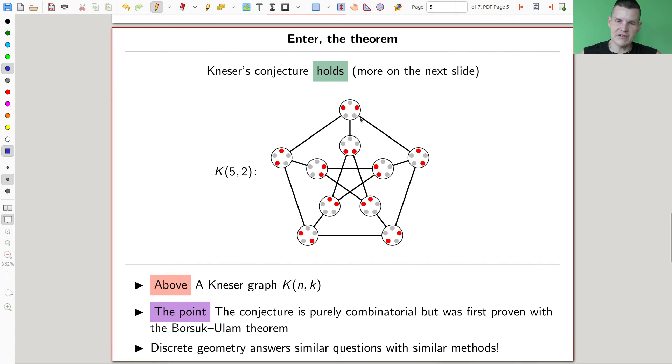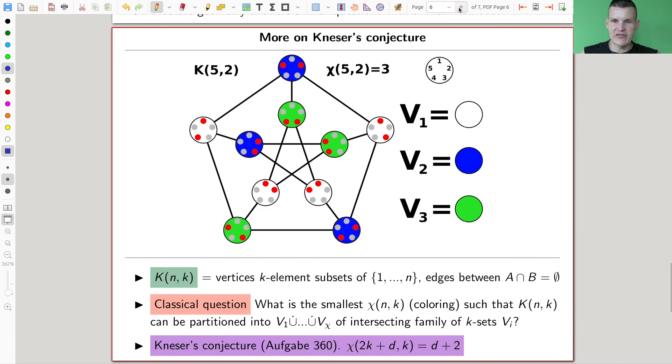So there's those graphs which are called Kneser graphs. They have two inputs, an N and a K. The N, we'll see what it is. The N is the number of subsets. I have a much better picture here. So N is the number of, you choose some numbers, 1 to N. So here 1 to 5. And that's N.